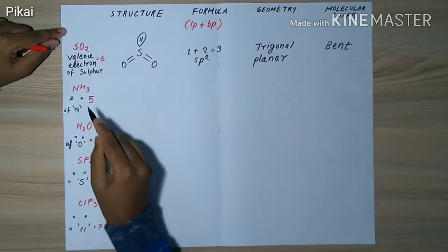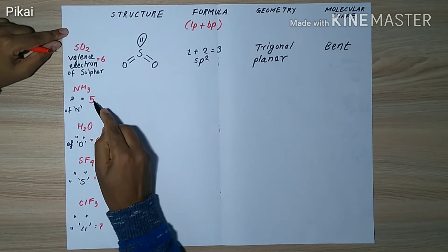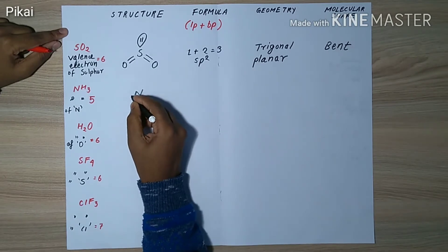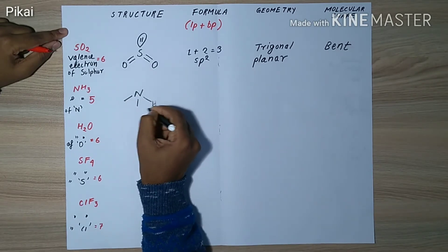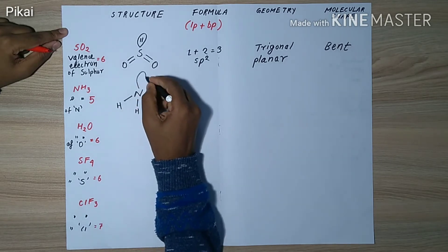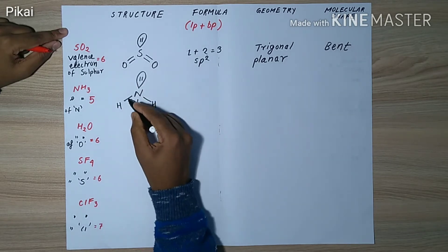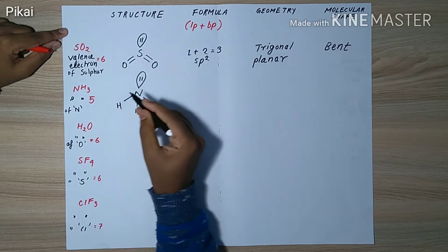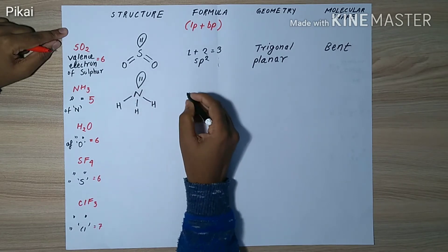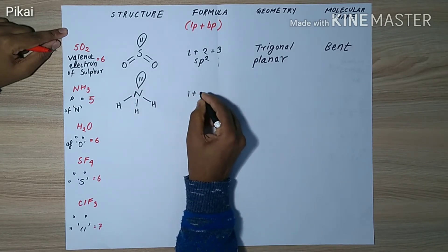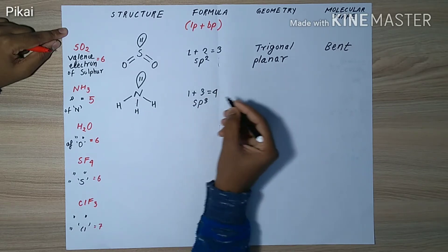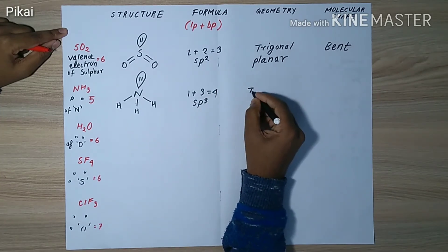For NH₃, we have nitrogen as the central atom with five valence electrons. Nitrogen shares three of them with hydrogen atoms, and the remaining two form a lone pair. From the formula, lone pair plus bond pair — one lone pair plus three bond pairs gives four.